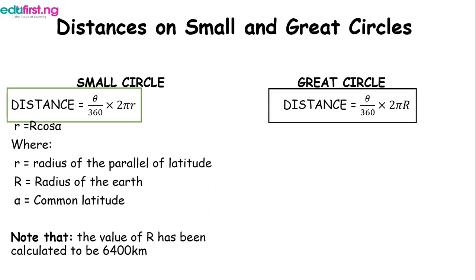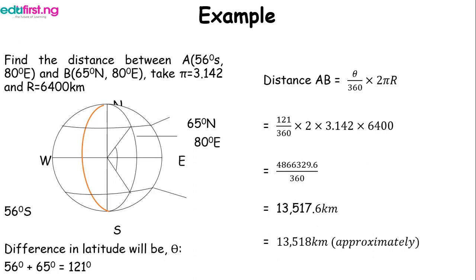Let's solve an example. Find the distance between point A — 56 degrees south and 80 degree east — and point B — 65 degree north and 80 degree east. Take pi as 3.142 and R as 6400 km. Draw a circle, place the four cardinal points, draw the Greenwich meridian, then place the values. 56 degrees south is latitude; 80 degree east is longitude. For B, 65 degree north is latitude; 80 degree east is already drawn.